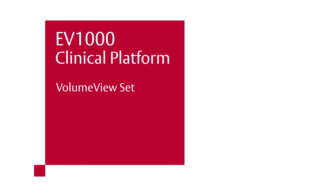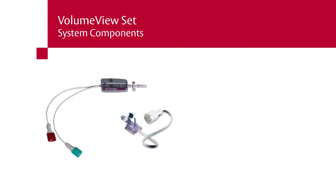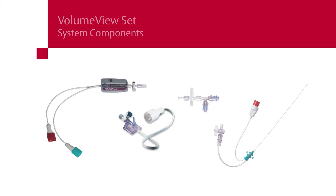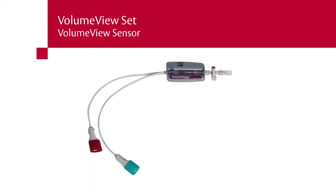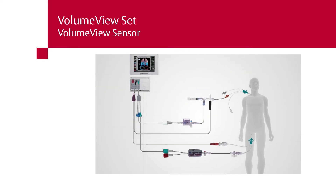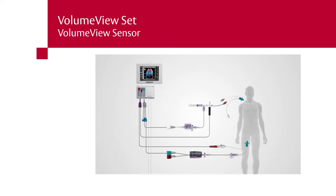The volume view set consists of the following components: volume view sensor, TrueWave pressure transducer and thermistor manifold, and volume view femoral arterial catheter kit. The volume view sensor is a disposable sensor connected to the volume view femoral arterial catheter for calculation and display of continuous cardiac output as well as intermittent volumetric calculations, calibrated by transpulmonary thermodilution cardiac output or TPTD. It is connected to the EV1000 clinical platform and the bedside physiologic monitor for continuous measurement and display of the patient's arterial pressure.